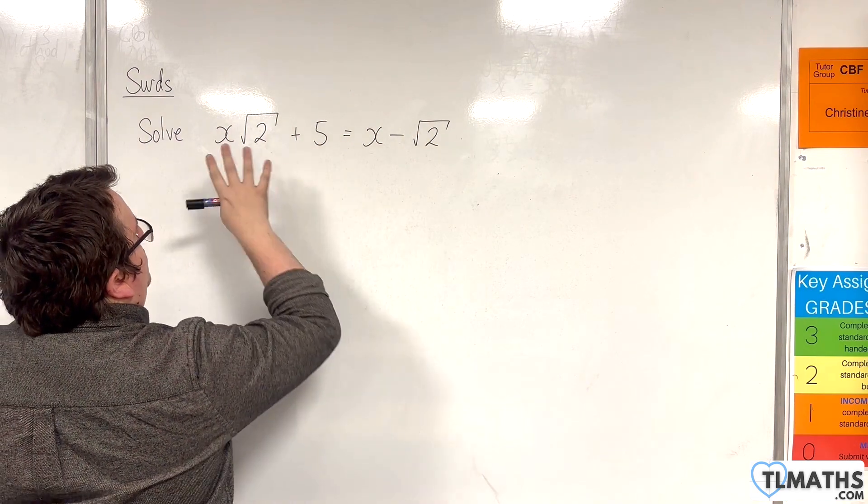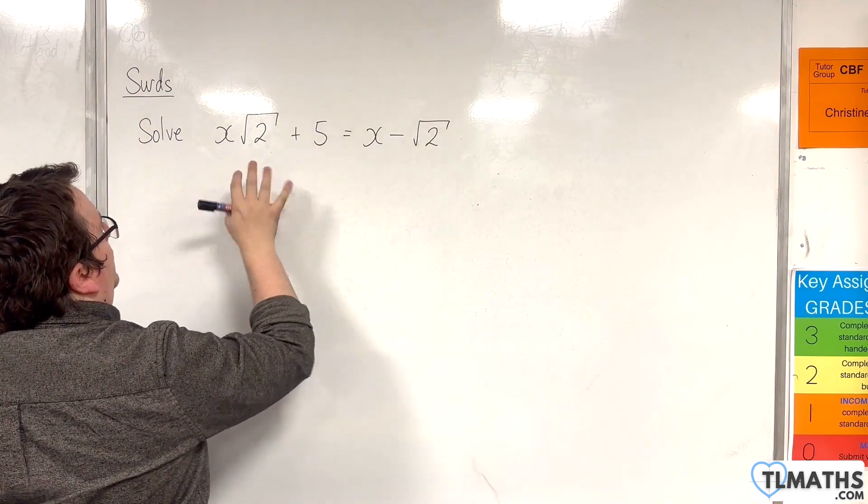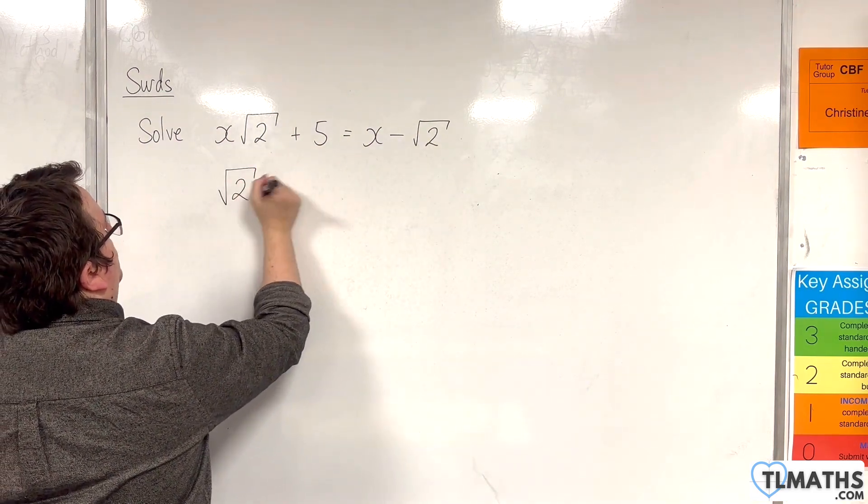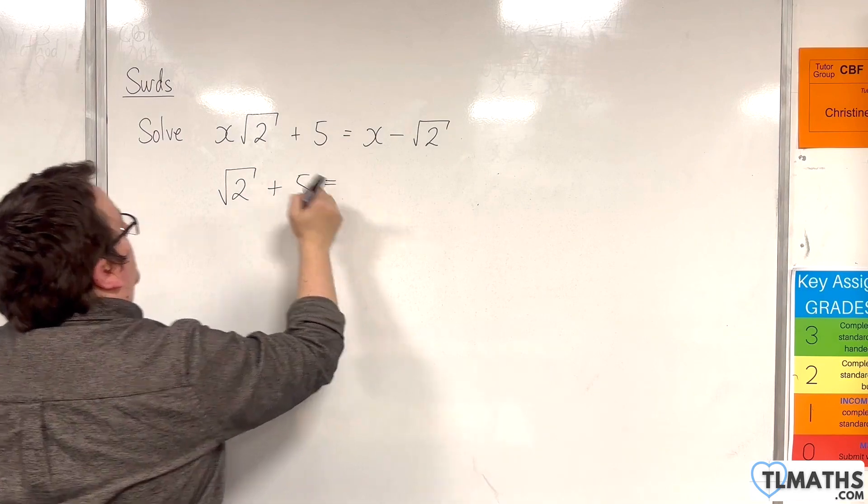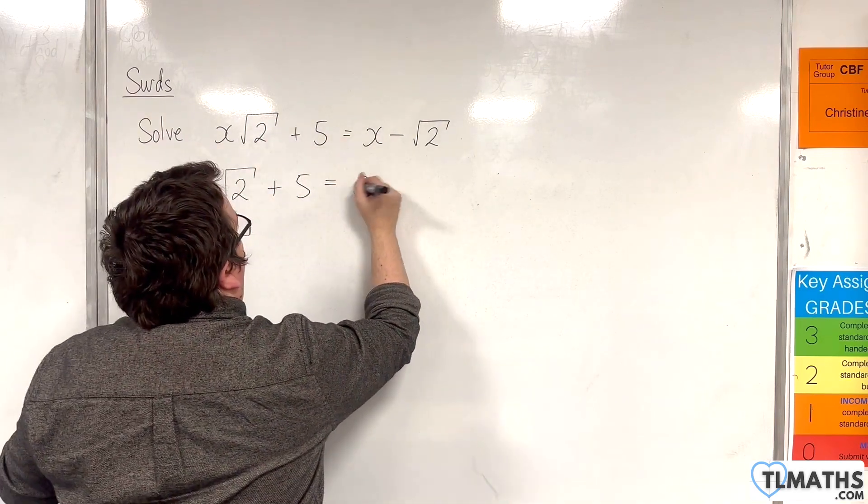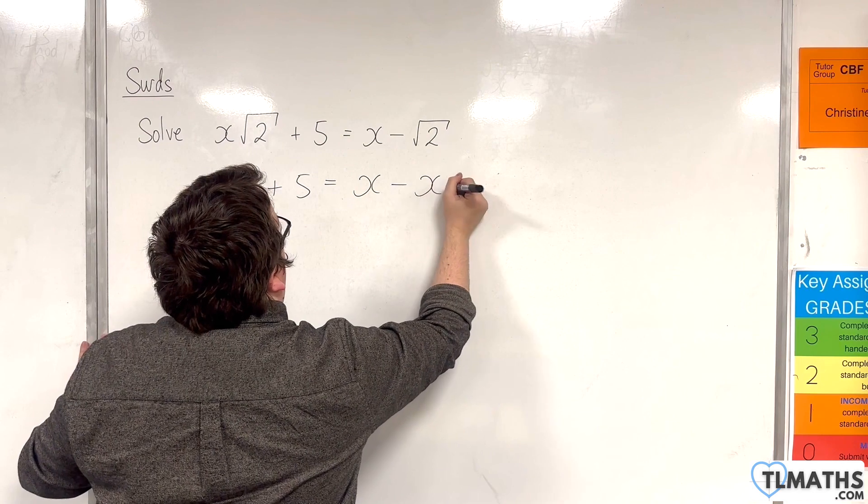So I'm going to add √2 to both sides. So I'll have √2 plus 5. And I'm going to subtract x√2 from both sides. So x minus x√2.